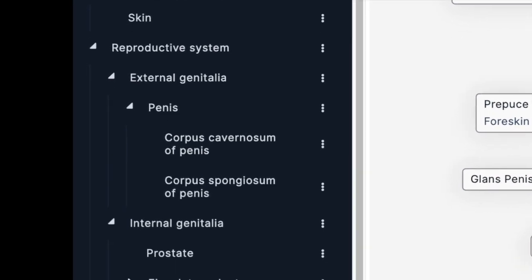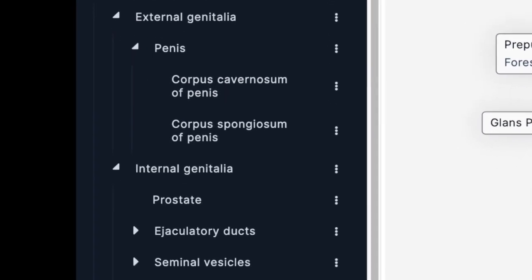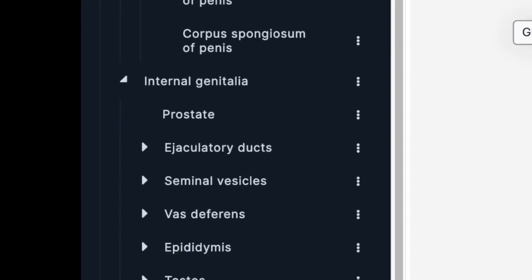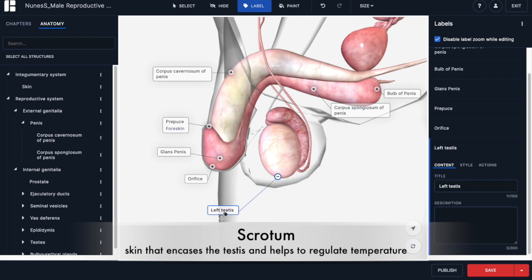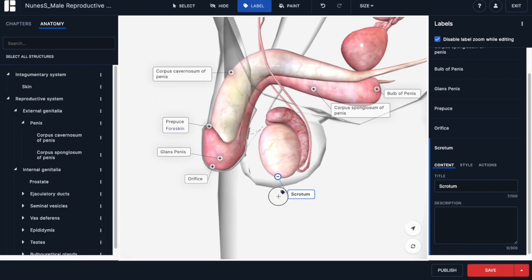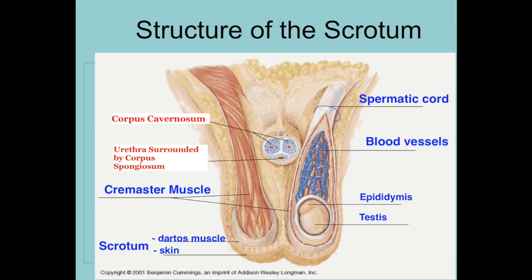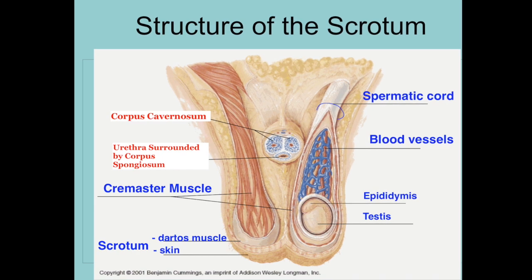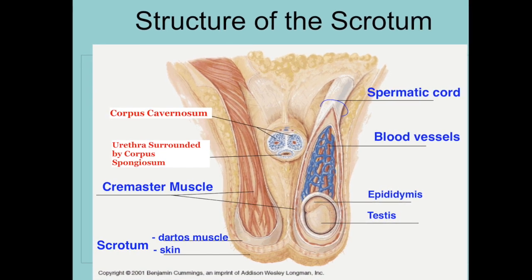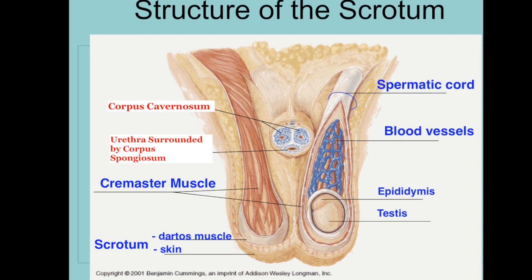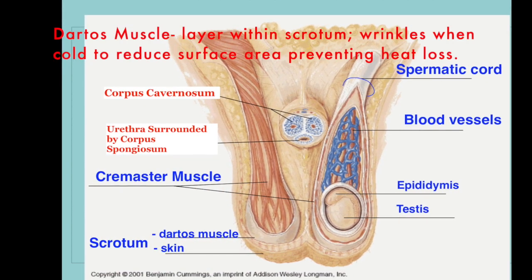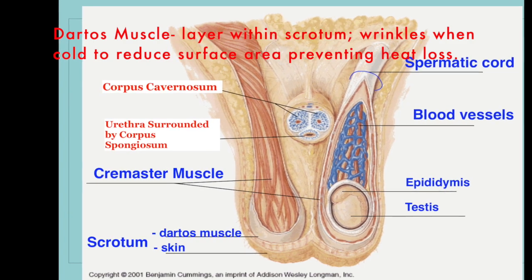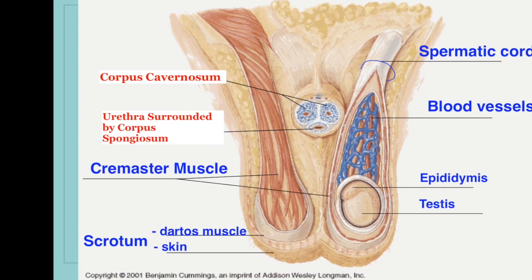Go to the left-hand menu bar and expand the internal anatomy list — all of these structures are involved in the production of sperm. The most superficial layer of the male gonad is the scrotum, which is skin that encases the testes and helps regulate body temperature. Sperm are very sensitive to temperature; normal body temperature is way too warm. There are sets of muscles that help with this: the dartos muscle is a thin layer of smooth muscle within the scrotum that causes the skin to wrinkle, reducing surface area and preventing heat loss.